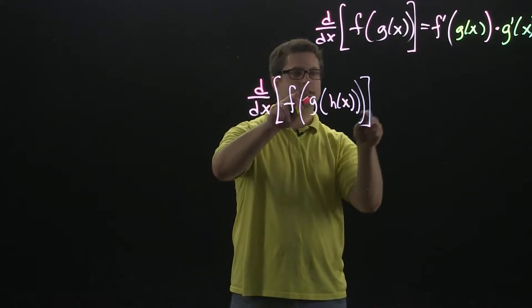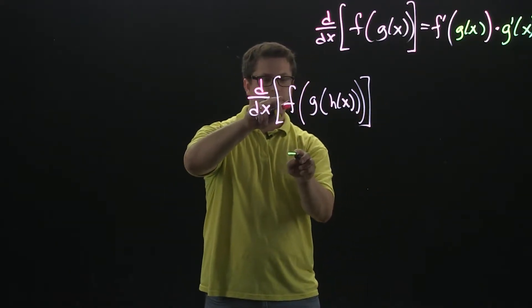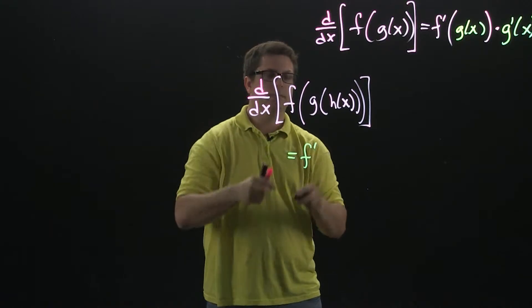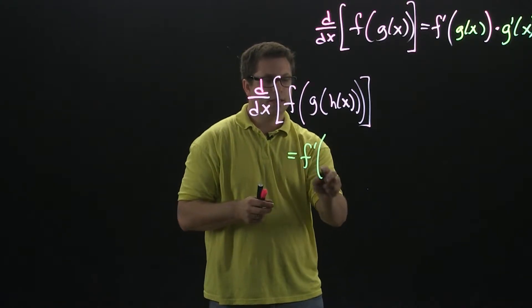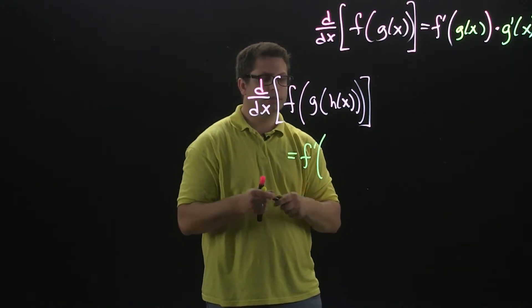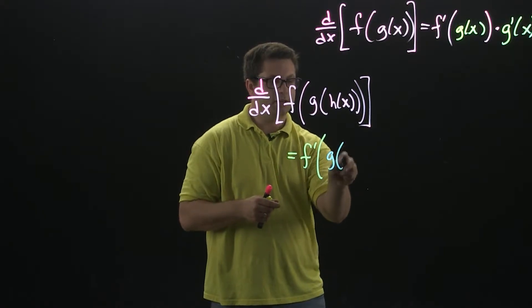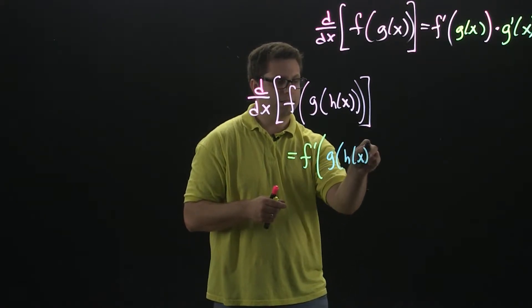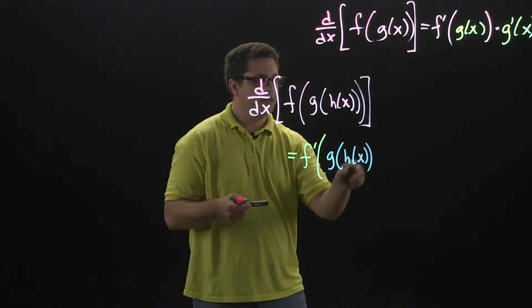First we'll take the derivative of the outside function. So come down here, which is going to be f, and so you got f prime. Then you're going to leave the inside alone, so that's g of h of x.